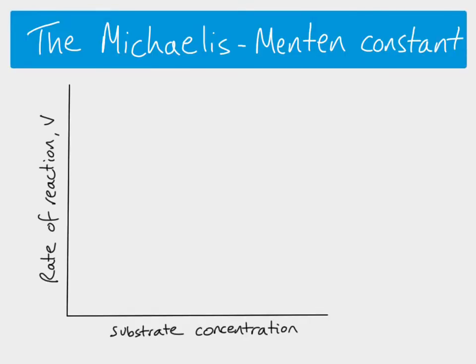So if we have a particular enzyme and we look at the rate of reaction, or V — the velocity of the reaction — at different substrate concentrations, we can then calculate the Michaelis-Menten constant.